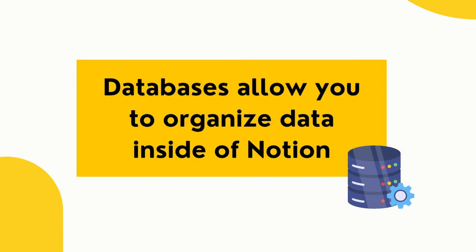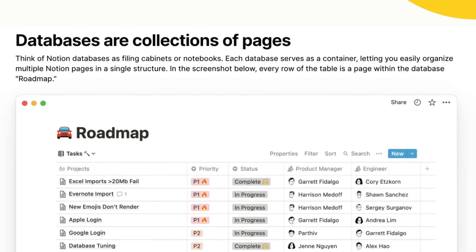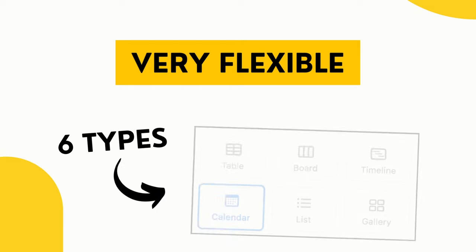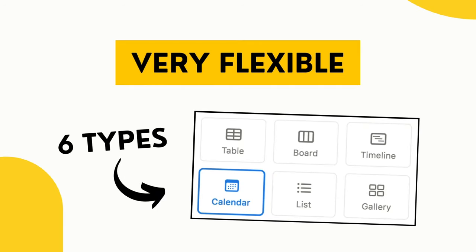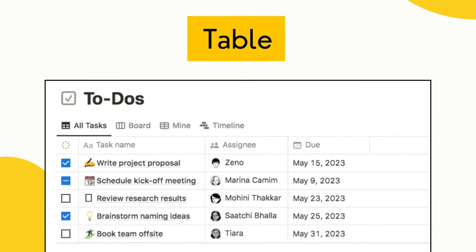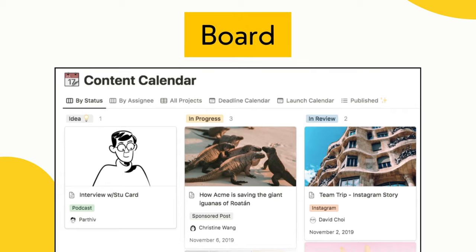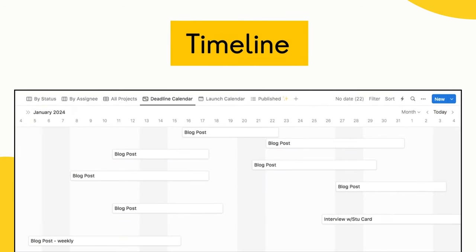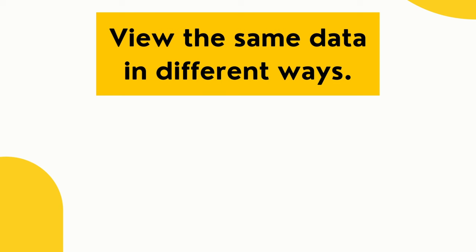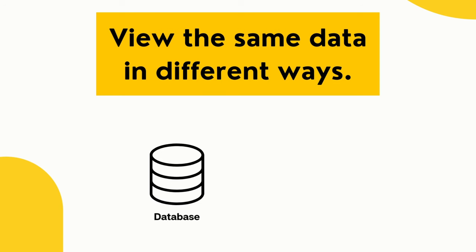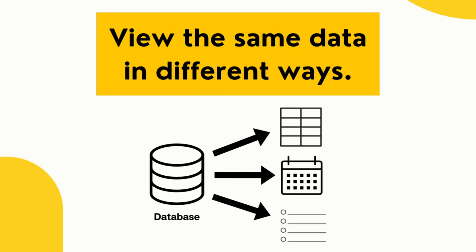Databases allow you to organize data inside of Notion, and there's so much you can do with them. Notion describes their databases as filing cabinets or notebooks where you can file away information, and they're super flexible. Notion offers six main types of database views: table, gallery, board, calendar, timeline, and list. These allow you to see the same data in different ways, and for each database you have, you can set up multiple different views.